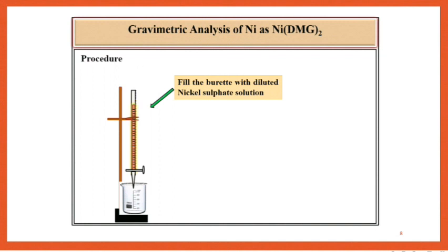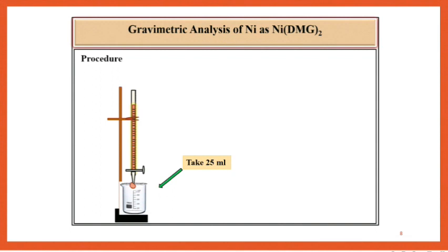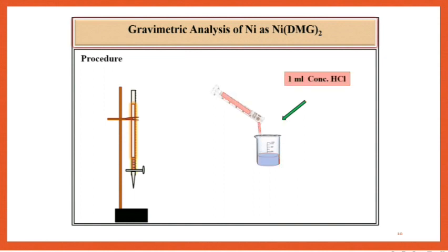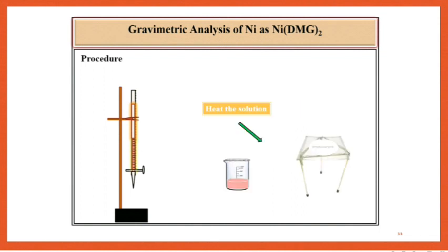From this burette take 25 ml of the diluted solution of nickel sulfate. To this solution add 50 ml distilled water and then add 1 ml concentrated HCl. Then heat the solution to about 80 degrees centigrade.